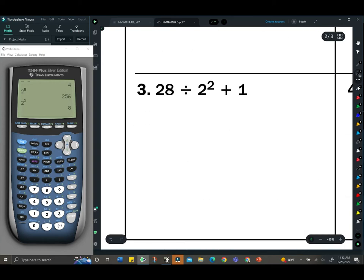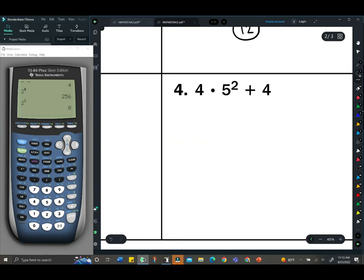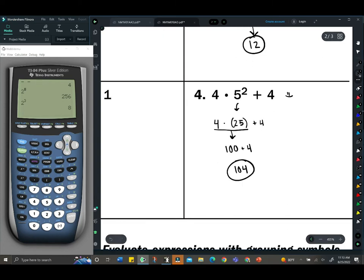Moving on to number 3, we have more things. Power first: 2² is 4. Division is our next step: 28 ÷ 4 is 7, plus 1 is 8. Last one, try this one out on your own. Pause and come back if you have to.